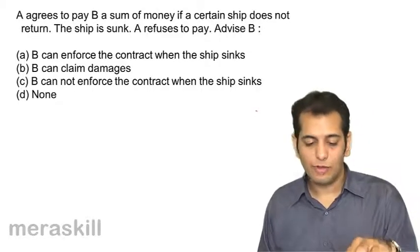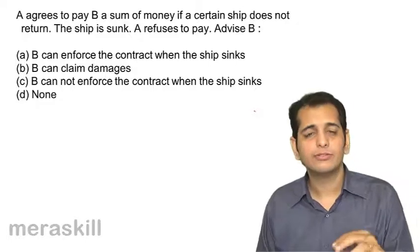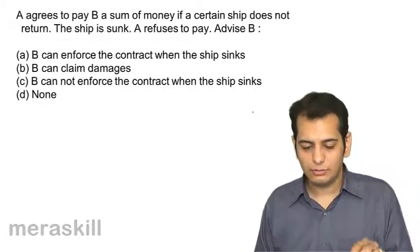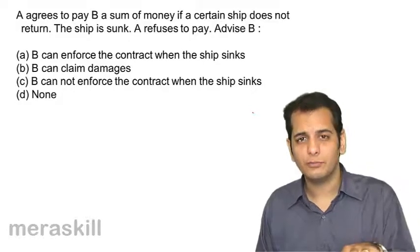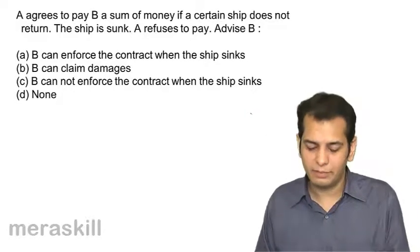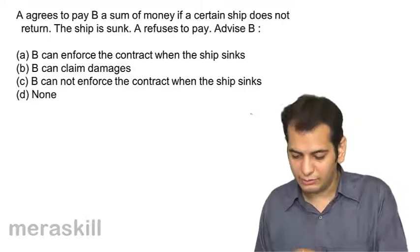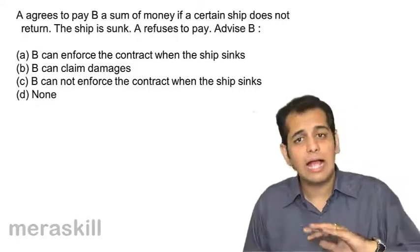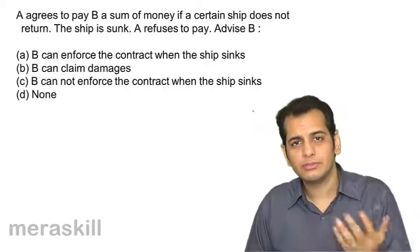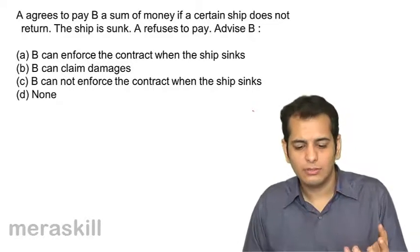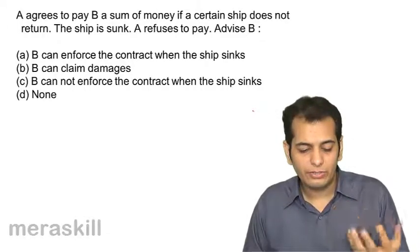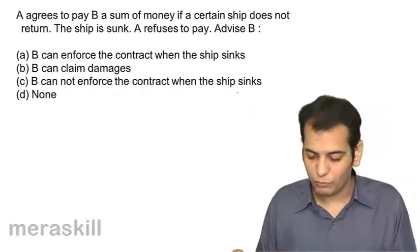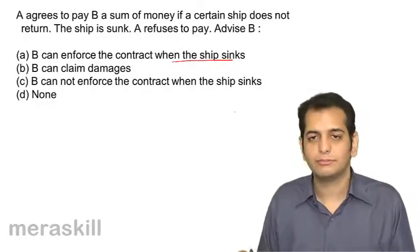This contract is like a contingent contract. The contract is enforceable if the event does not happen, and you can see that the ship sinks — that means the event has become impossible and it will not happen. Once the ship sinks, A is liable to pay money to B, and thus B can enforce the contract when the ship sinks.